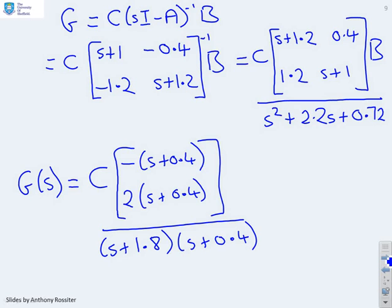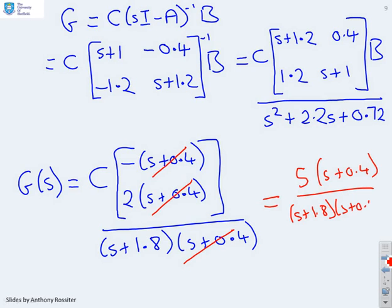Now I haven't used the C matrix yet, but actually I don't need to because now I can see exactly what it is that I was looking for. I can see that there's a cancellation between the numerator and the denominator. There's a factor S plus 0.4 in the denominator and all the numerator terms. And multiplying by C is neither here nor there. If I do multiply by C, I can do that. You'll find you get 5S plus 0.4 over S plus 1.8S plus 0.4. And the cancellation is still obvious.